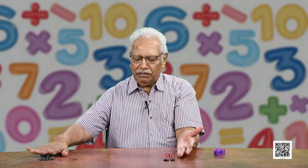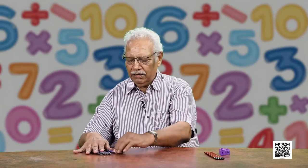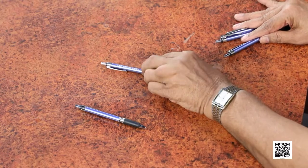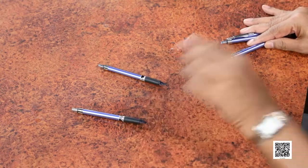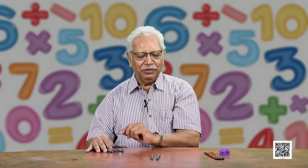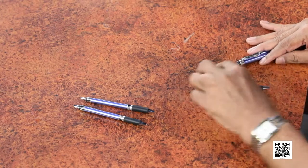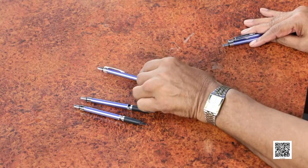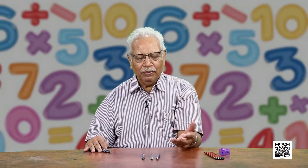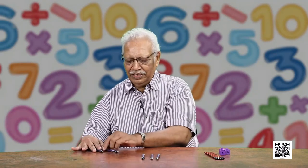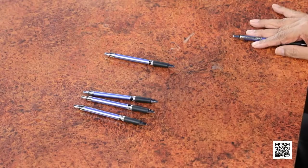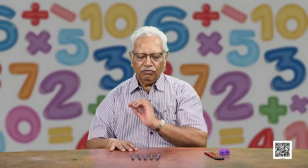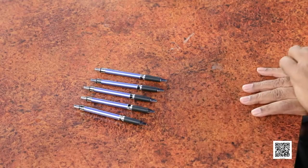And we can use more daily life objects like pens — one pen and another pen. How many pens are there? Now you know 1 and 1 make 2. Similarly, 2 and 1 — how many pens are there? 2 and 1 make 3. You do not have to count by now; you know that 2 and 1 make 3. Similarly, 3 and 1 — how many do they make? 4. And 4 and 1 — how many do they make? 5.